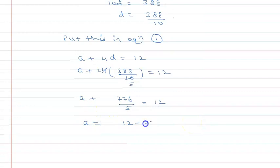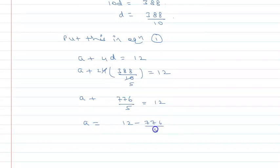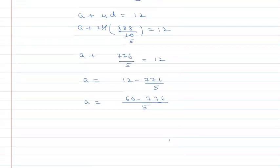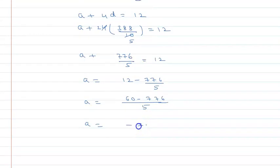So this moves to subtract, so a will be equal to 12 minus 776 divided by 5. So a will be, taking LCM, this is 12 times 5, that is 60 minus 776.